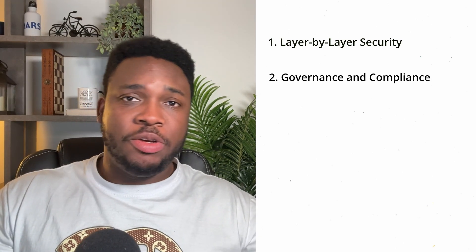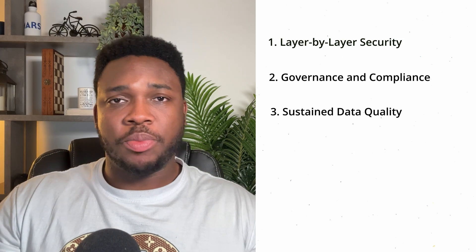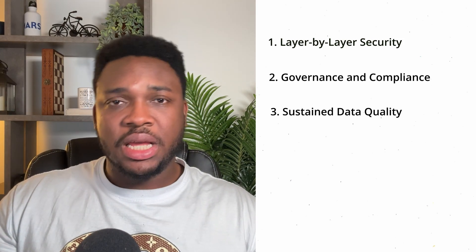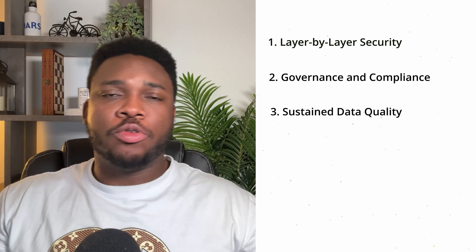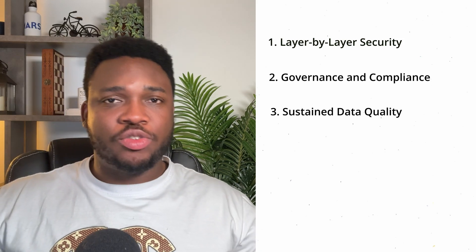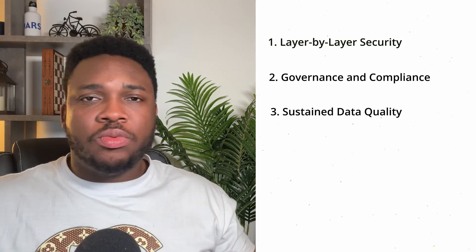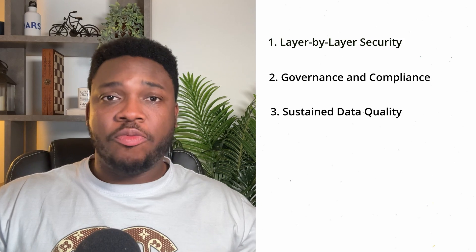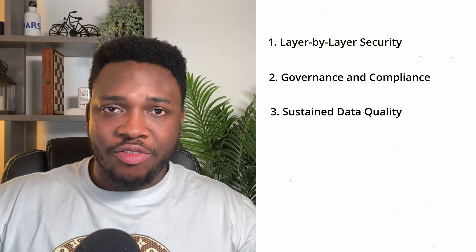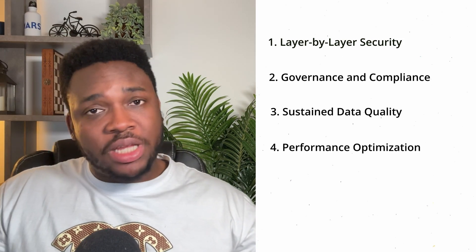The third best practice is sustained data quality, which should be a non-negotiable priority. One approach is to implement automated validation rules directly into your data pipelines, checking for schema conformance, null fields, or unexpected data patterns. When records fail these checks, it's best to quarantine them in a separate error table for further review rather than discarding them entirely. Tools like Delta Live Tables in Databricks can help formalize these data quality checks and ensure each data set meets minimum standards before moving to the next layer.